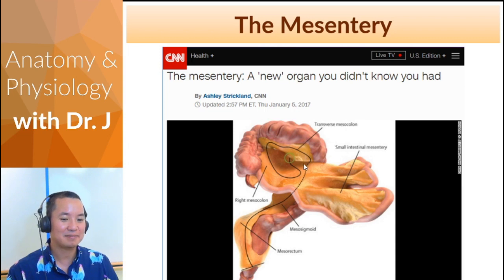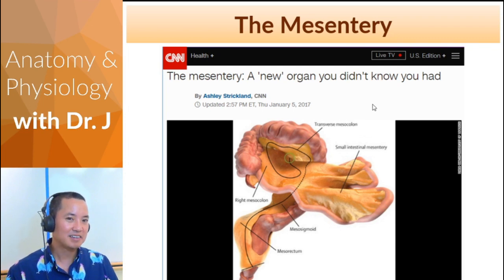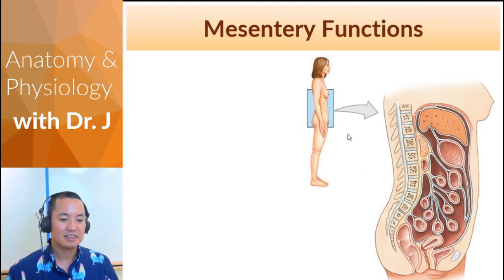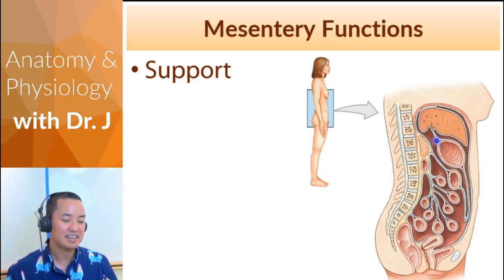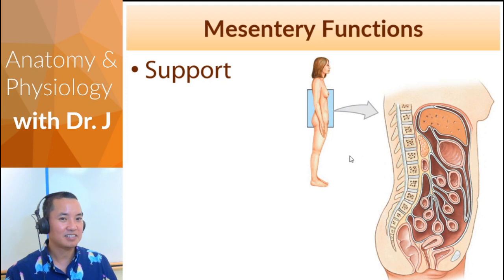What changed is that the mesentery is no longer considered just a random sheet of connective tissue — it actually has consistent structures. The mesentery functions to support and organize your organs. With the liver, large intestines, and small intestines all in there, the mesentery keeps everything in place. When you jump around during daily life, it prevents your liver from exchanging places with your intestines or your intestines from wrapping around everywhere.